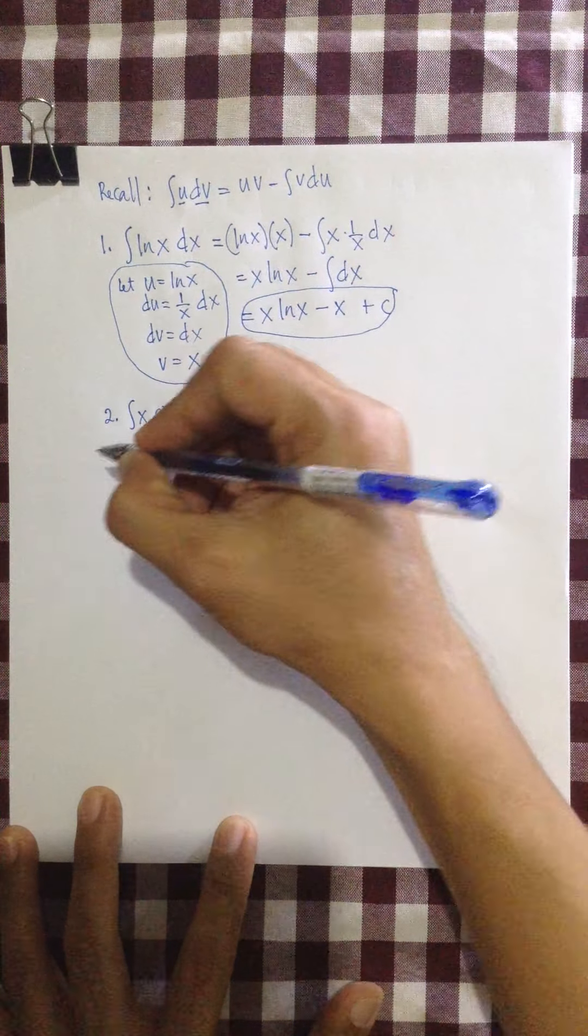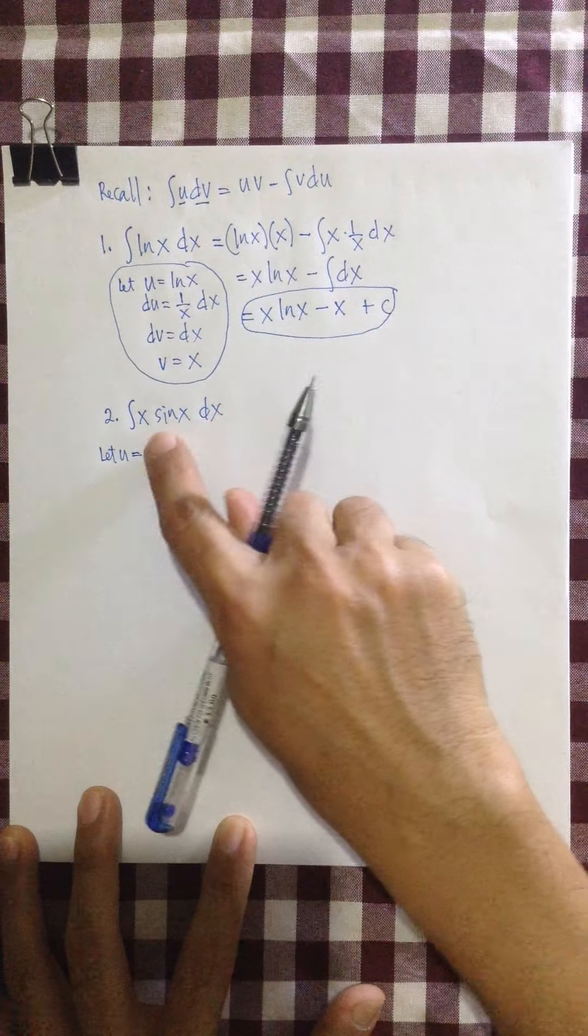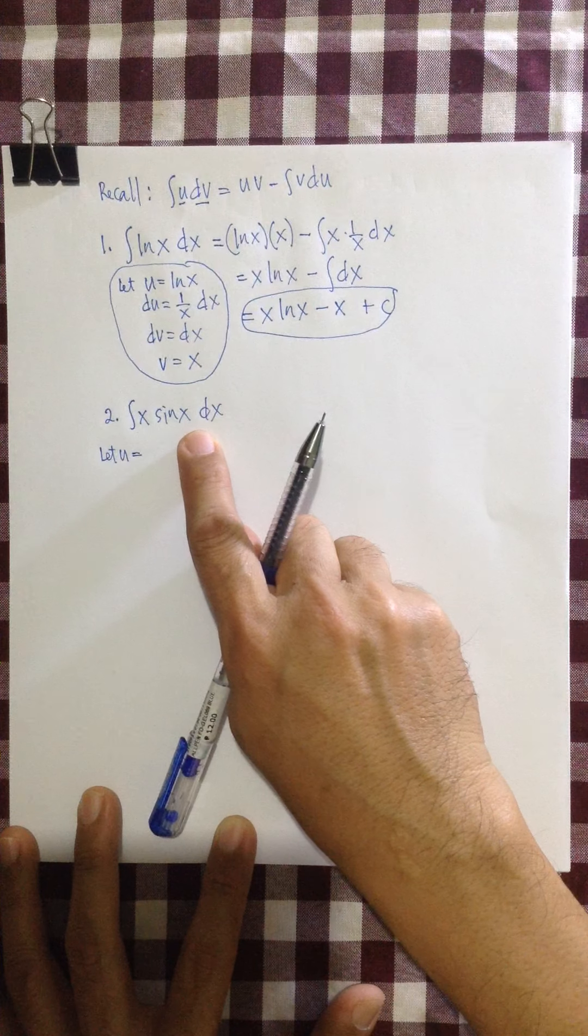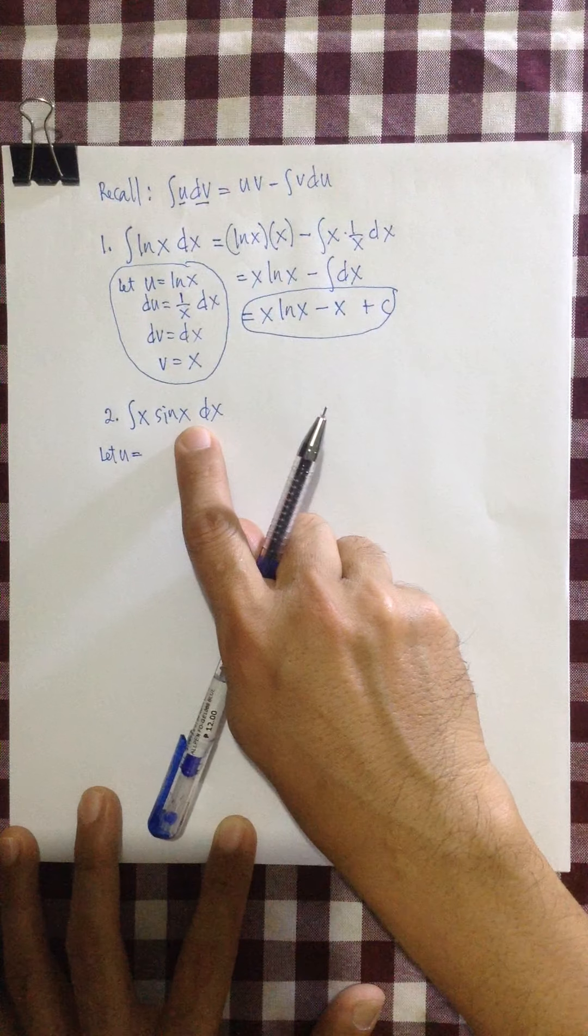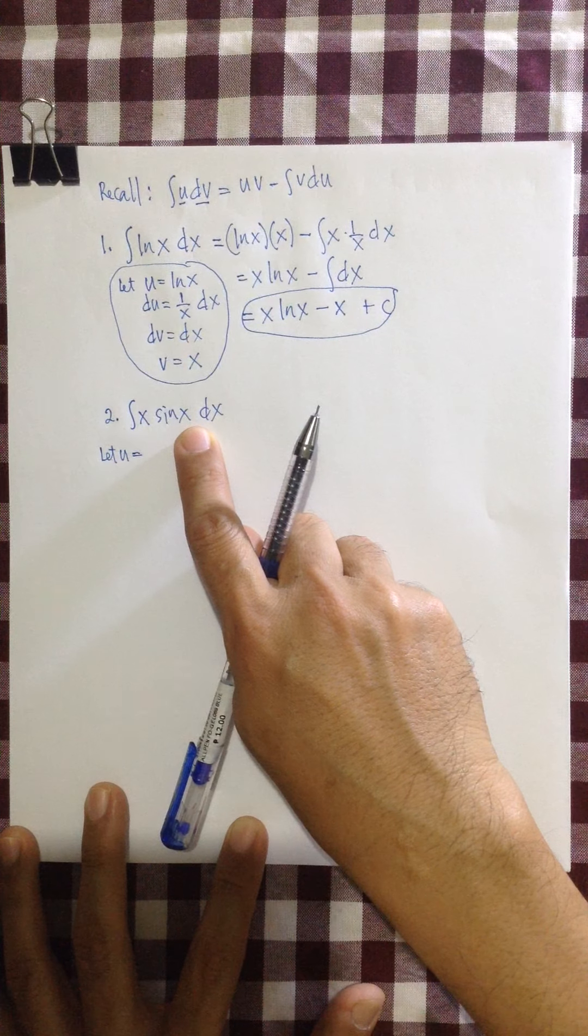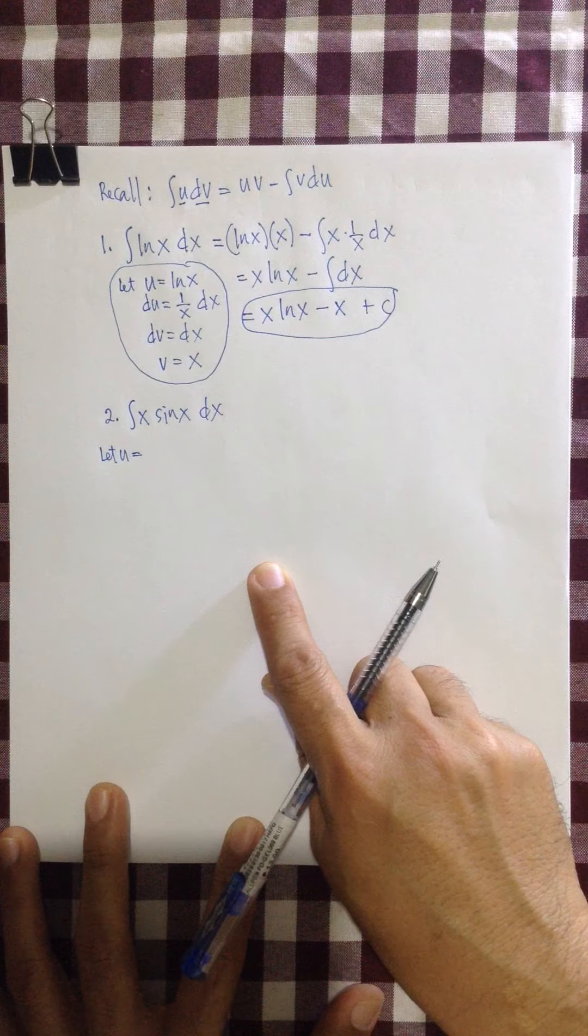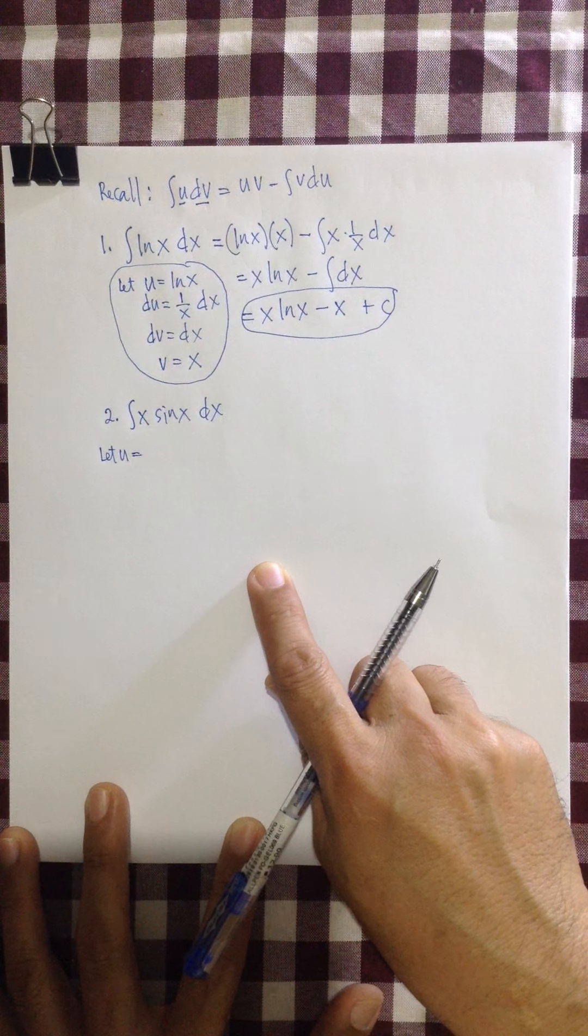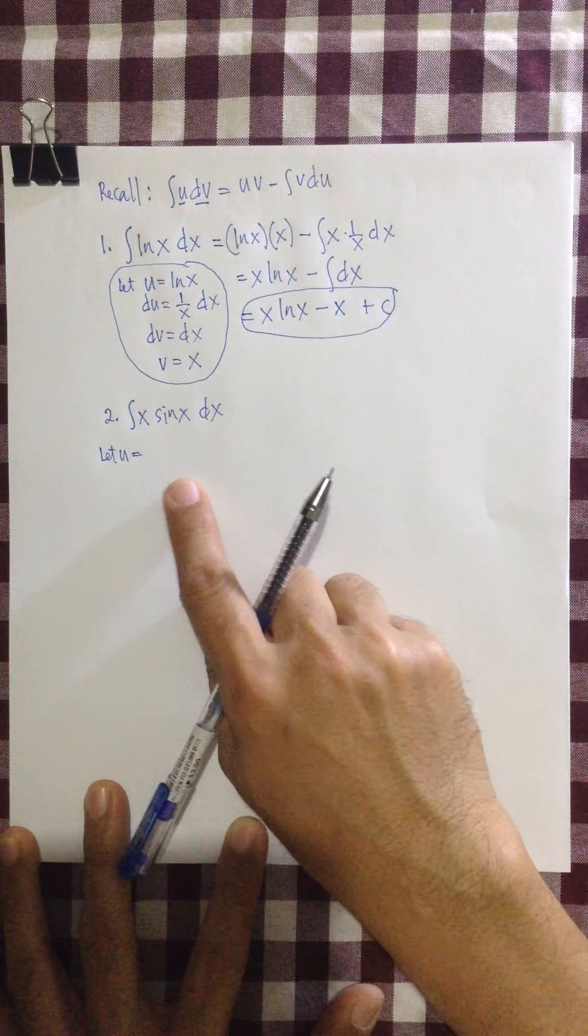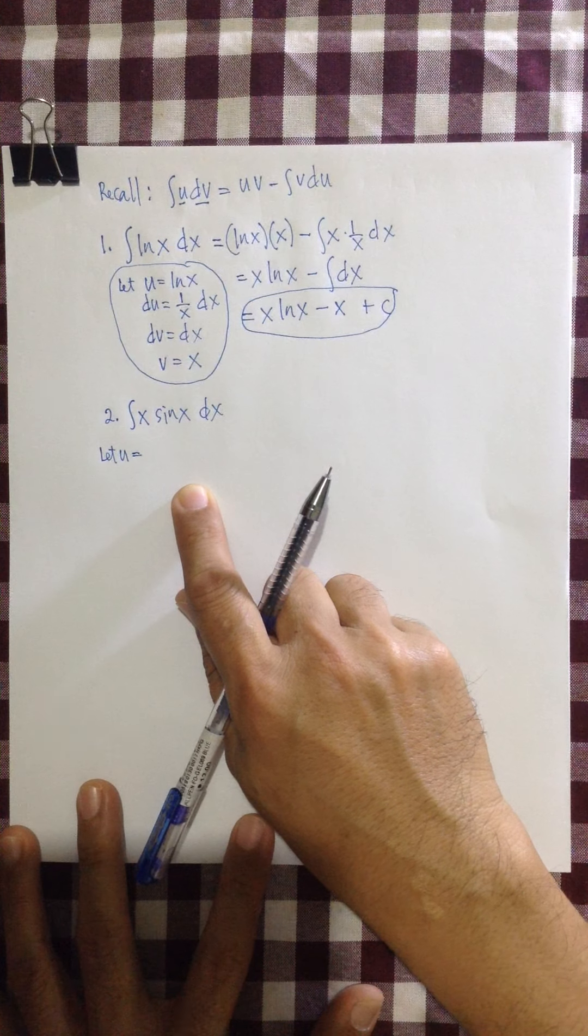So again, let's decide for our u. Okay, both are differentiable. x has a derivative, sine x also has a derivative. So the problem here is which of them should be chosen for our u. Now, be careful on how you choose for your u because if you have incorrectly chosen an expression for your u, that would actually lead you to a more complicated expression. I think we have a hint given by the lecturer in the video that I sent to you. That lady lecturer there.